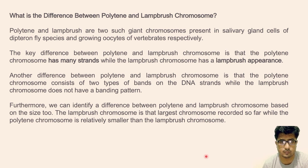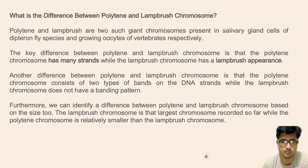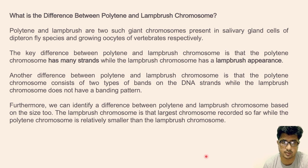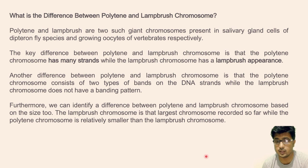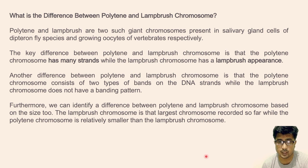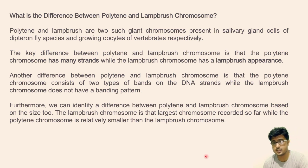The main differences: polytene chromosomes have multiple strands, whereas lampbrush chromosomes have multiple loops giving the lampbrush appearance. Another key difference is banding — polytene chromosomes show dark and light banding patterns, but lampbrush chromosomes do not show any banding. Finally, in terms of size, lampbrush chromosomes are far larger than polytene chromosomes.